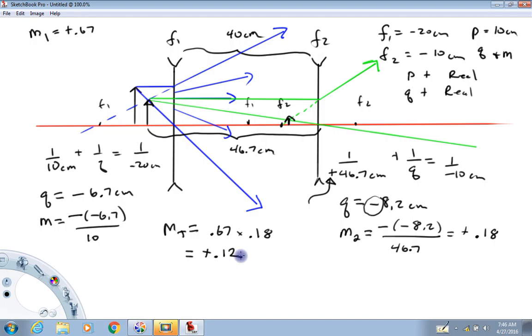I hope this example helps demonstrate how to do a lens problem for a double lens system, both with ray diagrams and thin lens equation. So have a great day.